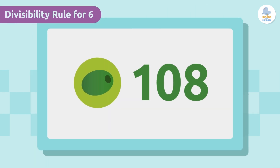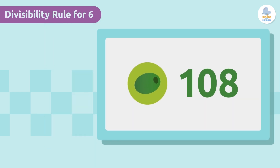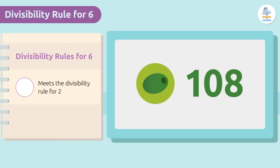There are 108 olives. To find out if this number is divisible by six, we have to check if it meets the divisibility rule of two and also three.